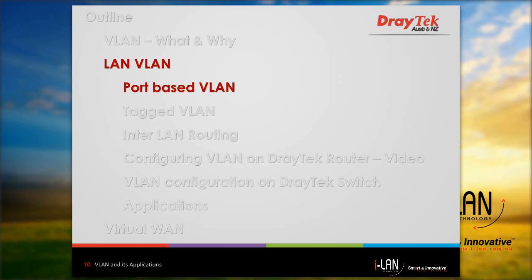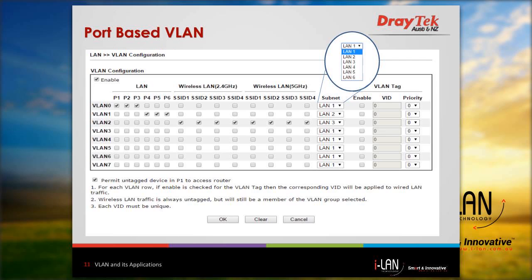Now let's look at the VLAN configuration. We'll see port-based and tag-based VLAN one by one. On a DrayTek router, go to LAN VLAN configuration, enable VLAN configuration, assign all the ports and SSIDs to the required VLAN, and select the LAN subnet from the dropdown. SSIDs will be available only in wireless router models. Here we are using a dual-band wireless router, so you can see eight SSIDs on the screen — four for each band.